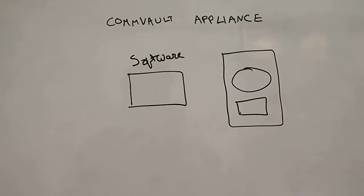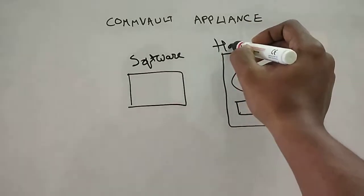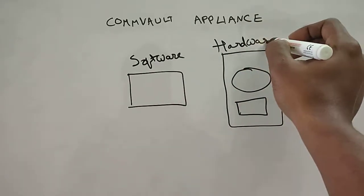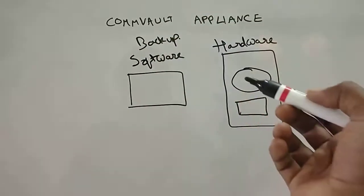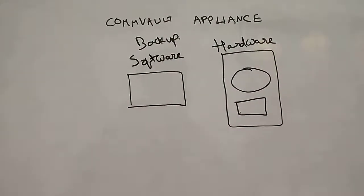There are many vendors like Dell and Hitachi and many other companies that actually give hard disks or external storage devices. So this hardware is a separate entity altogether when you're buying a backup software. Previously, it was only the backup software that used to be sold.